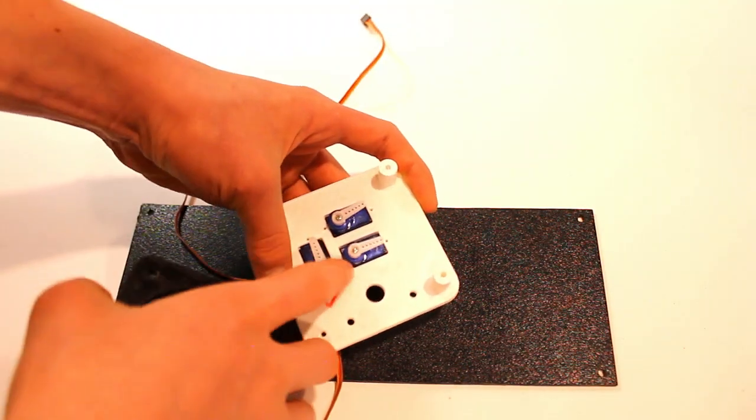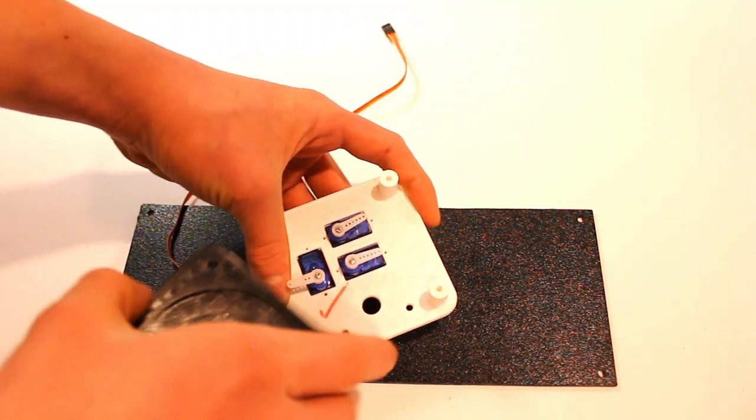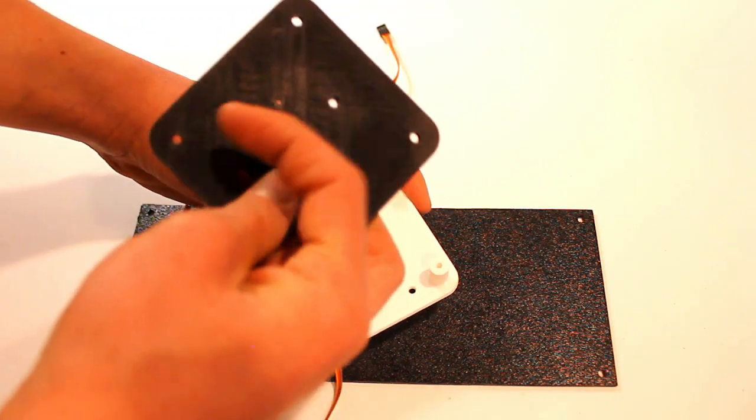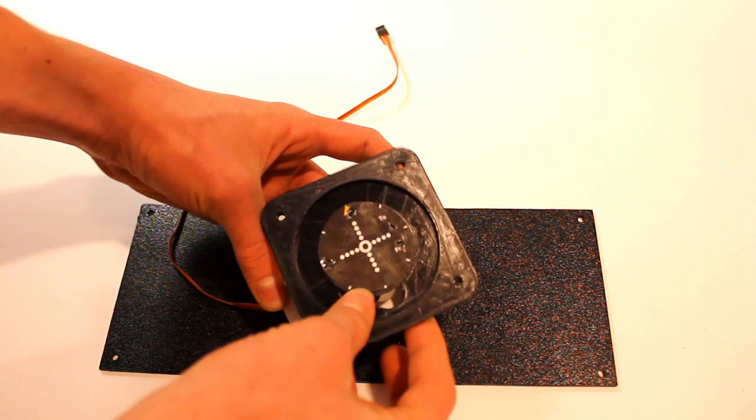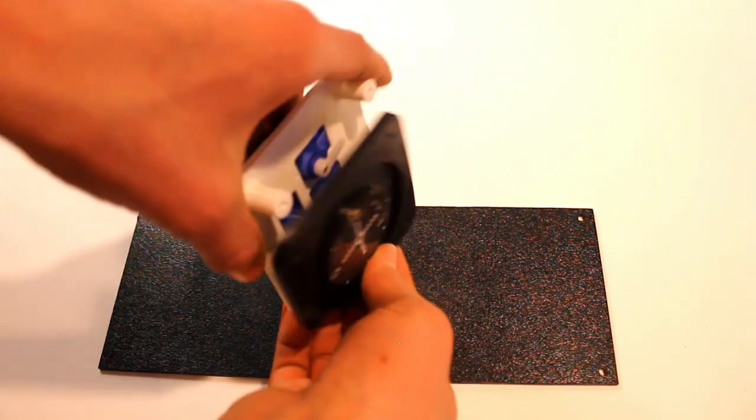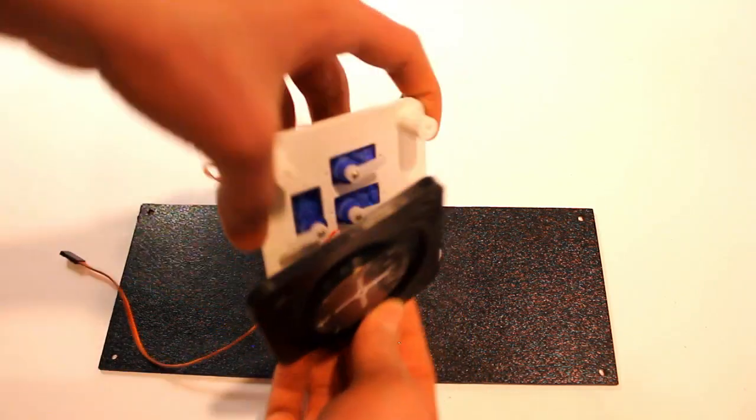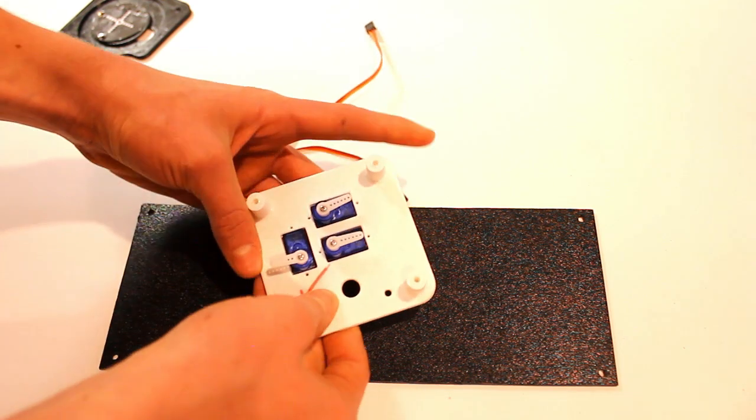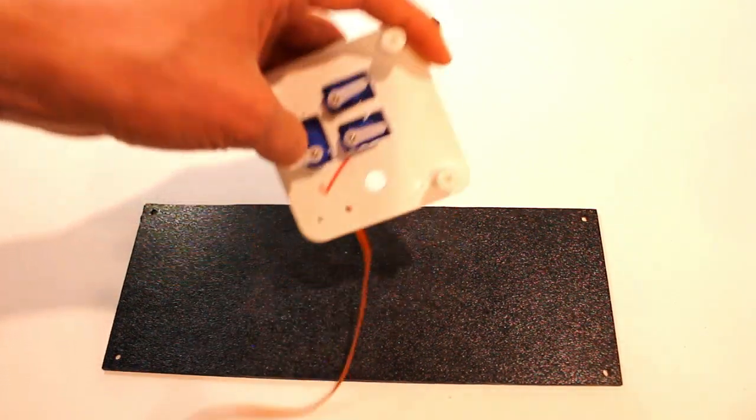You'll want to make sure that the center of rotation for the servo matches up with the little holes in the front panel. So this one lines up, this one lines up, and this one lines up. So it's the center here and the center here. Now you can screw these servos on.